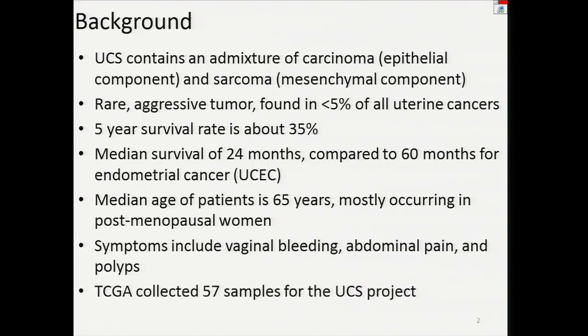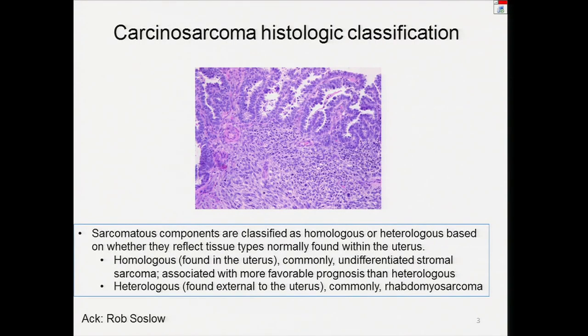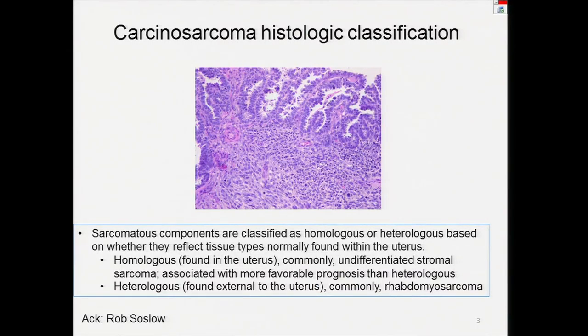TCGA collected 57 samples of this rare tumor type for the UCS project. Carcinosarcoma has two histological classifications: if the sarcomatous component originates from tissues normally present in the uterus, the classification is homologous; if the tissues are not from the uterus, the classification is heterologous — commonly rhabdomyosarcomas. Heterologous tumors have worse prognosis than homologous tumors.